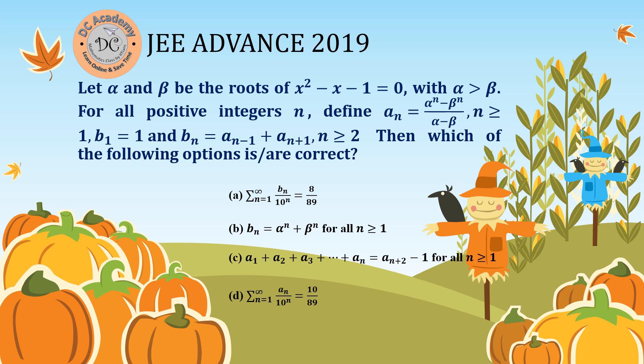In this video, we are going to solve a problem which appeared in JEE Advanced 2019. In this particular problem, alpha and beta are the roots of the equation x squared minus x minus 1, and alpha is greater than beta. They must satisfy some sequences: aₙ equals alpha to the power n minus beta to the power n divided by alpha minus beta, and bₙ is related to aₙ by the relation aₙ₋₁ and aₙ₊₁. We have multiple correct options to find, so we need to solve four different sub-problems.